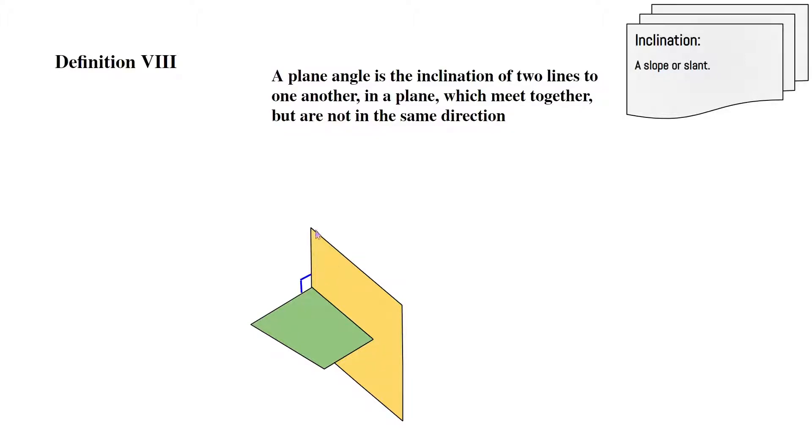So over here we have the line bordering the yellow square, and then over here we have the line bordering the green trapezoid. So these two lines are at a slope. Now when they meet, they create this blue angle.